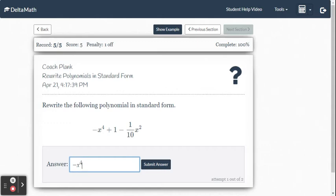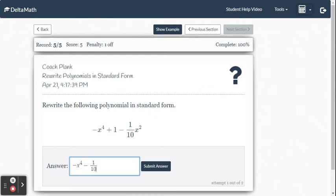And then my next highest degree is 2. So it's going to be negative 1 over 10. Now I put x squared.